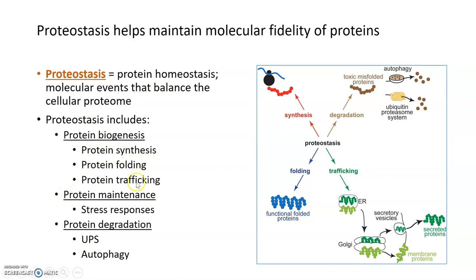Proteins need to get to the correct location to perform their functions. Proteostasis also includes a maintenance function for proteins, usually through the form of stress responses, which we'll talk about in the next part of the lecture. Proteostasis also includes machinery and mechanisms to degrade proteins or get rid of anything that's non-functional or non-structured. Two of those include the ubiquitin proteasome system and autophagy.